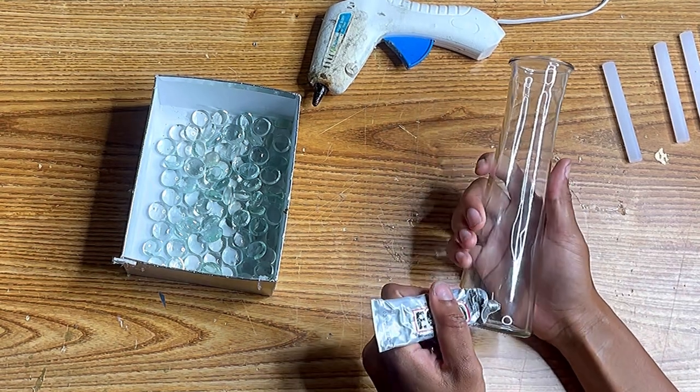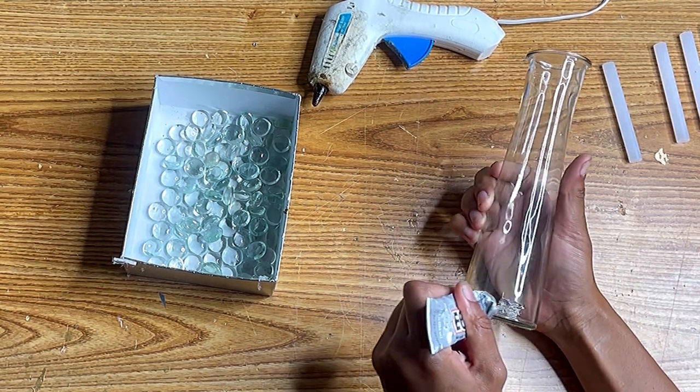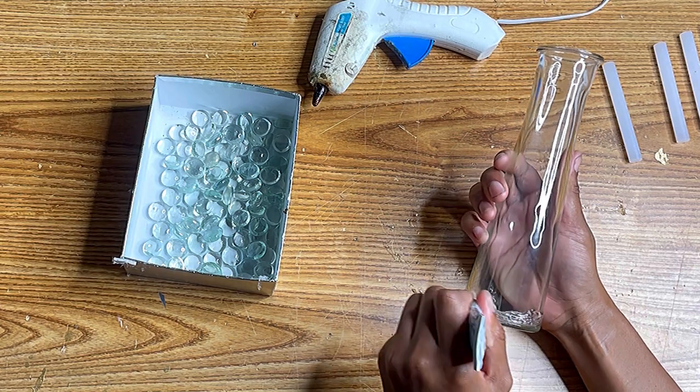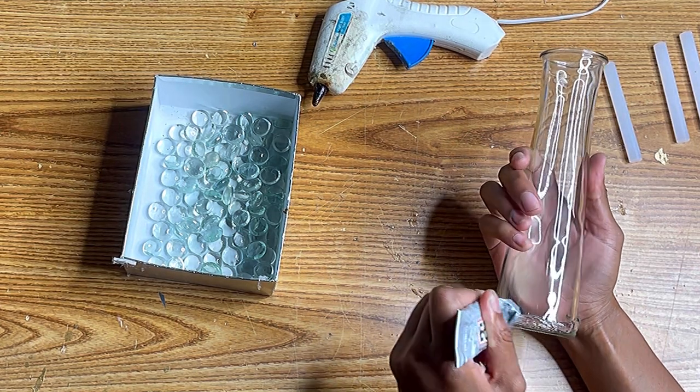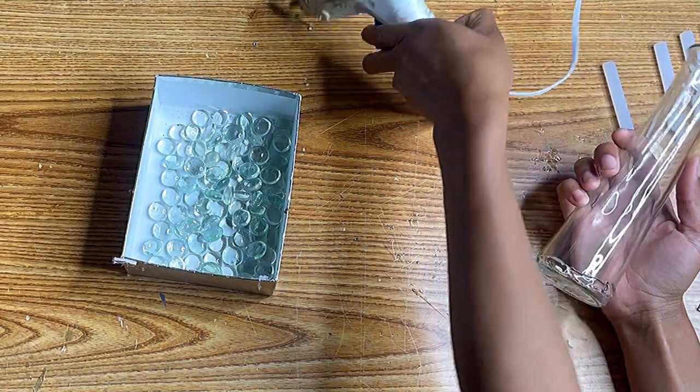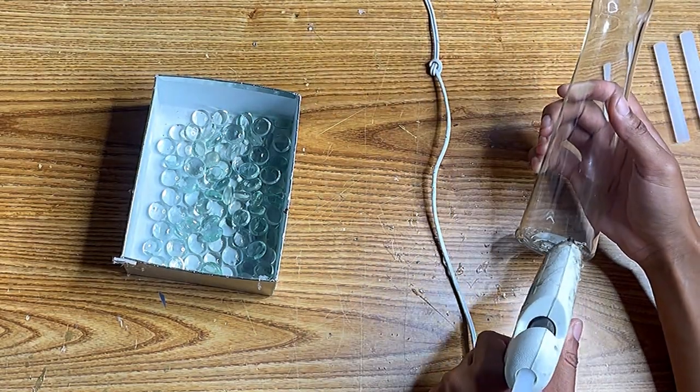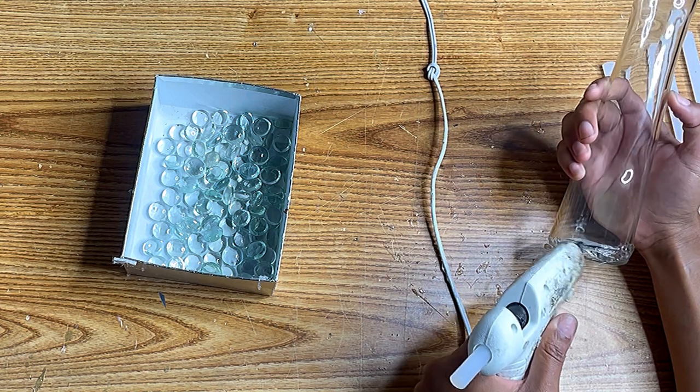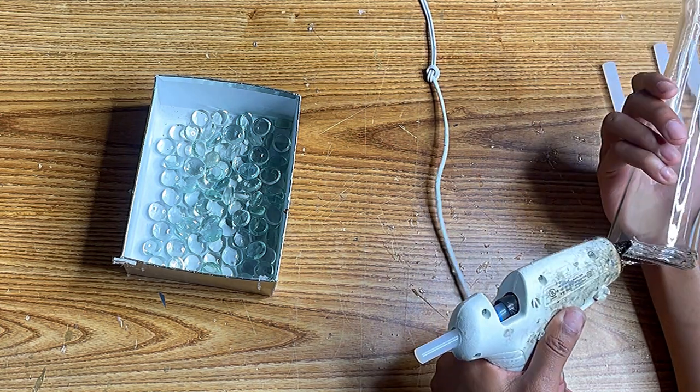I'll first start off by gluing these marbles around the vase using my E6000 and my hot glue gun. I'm gonna put the E6000 around the rim of the vase, and I'm doing it this way because I've already done the other two candle holders and figured out this was the best way and the best technique.